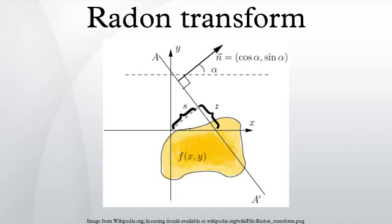Generalized Radon transform: let s ∈ R, α ∈ [0, 2π]. We let μ be a smooth function, 2π periodic in α, defined on R × R². Then, the generalized Radon transform is defined as follows.